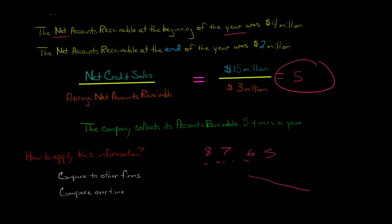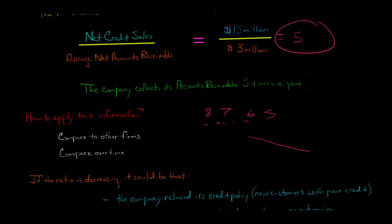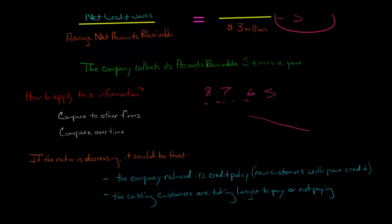So it could be a couple of reasons that that's happening. One is, it could be maybe the company relaxed its credit policy. So sometimes when companies get in financial trouble, one way to boost sales is to just start extending credit to pretty much anyone. So if they have new customers that aren't really very credit worthy, it could be that those customers, they come in and even though we have, quote unquote, a sale, it's never being collected. Or it's taking a long time to collect it. Now, it also could be that the company didn't necessarily relax its credit policy, but maybe it's just that the existing customers are taking a longer amount of time to pay their bill or maybe they're not paying at all. And that could be maybe there are some issues with the economy and so forth.